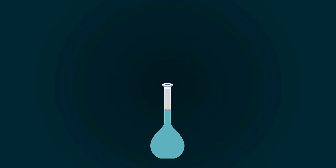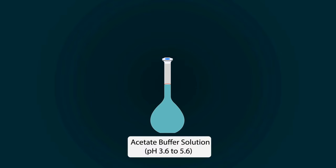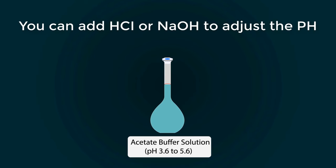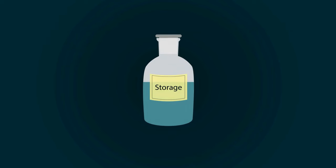We have successfully prepared acetate buffer solution. You can add HCl or sodium hydroxide to adjust the pH. You can store it in a storage bottle. Thanks for watching this video.